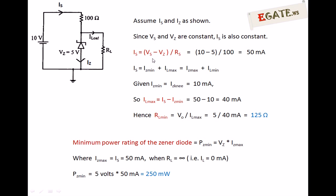IS equals (VS minus VZ) divided by RS. VS is 10 volts, VZ is 5 volts, RS is 100 ohms. So IS equals 50 milliamperes. The 10-volt source is supplying 50 milliamperes flowing into the Zener diode as well as the load resistor.